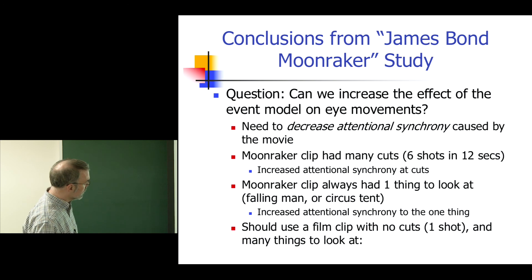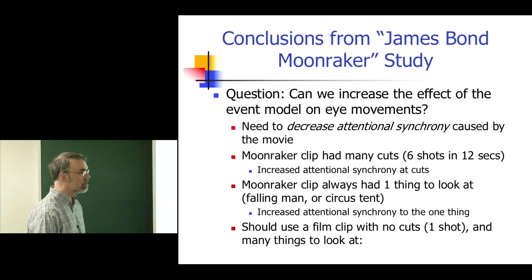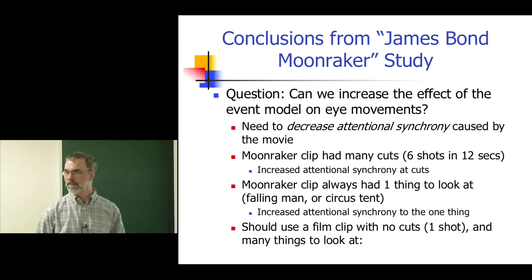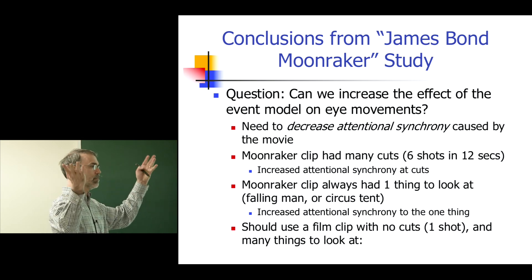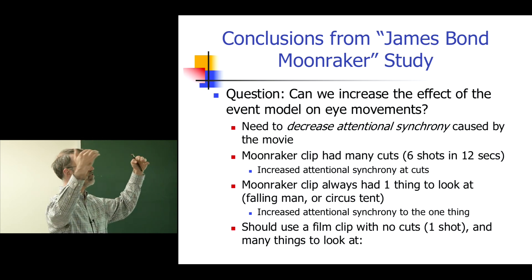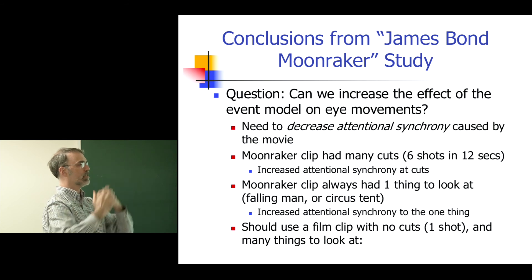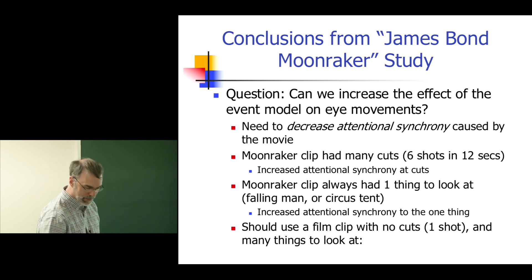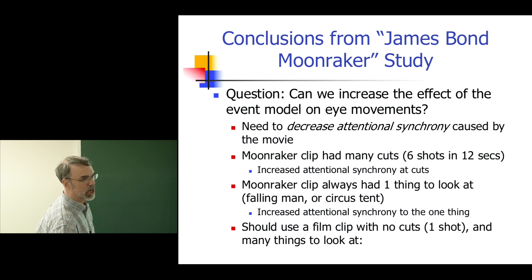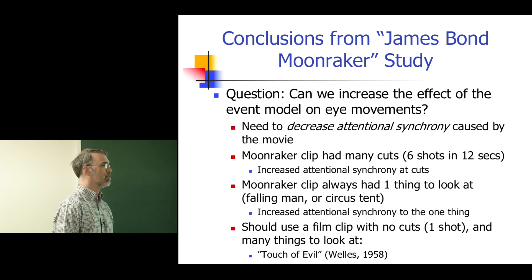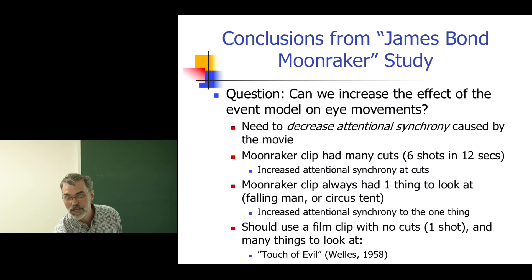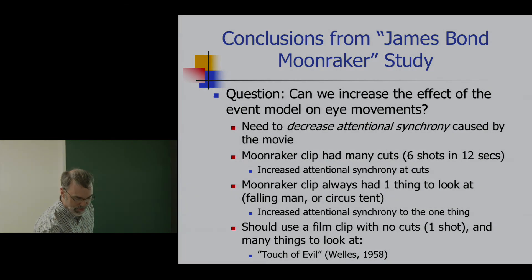What we need is a film clip with no cuts — just one shot — and many different things to look at. That would give us less attentional synchrony, less tyranny of film, and potentially more effect of the event model. So we picked a very famous film shot from Touch of Evil by Orson Welles: a three-minute-and-30-second single shot with no cuts.